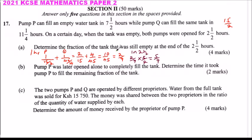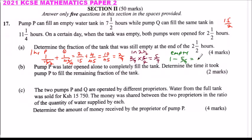In 2 and a half hours, the two pipes fill 5 over 9 of the tank. So the empty fraction is 1 minus 5 over 9, which gives you 4 over 9. So 4 over 9 of the tank is still empty.